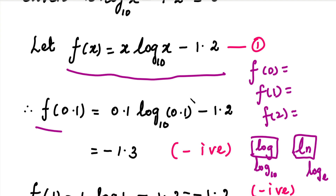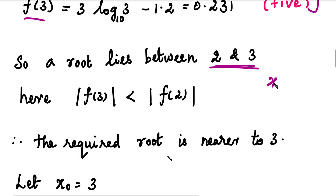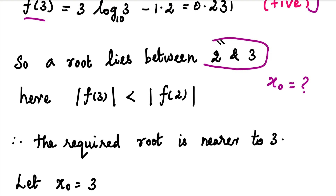We already have a video for that; please check the link in the description. We will get to the x0 value, because we need to fix the first iteration x0 value. In this Newton's Raphson method, there is one procedure: the root lies between 2 and 3.